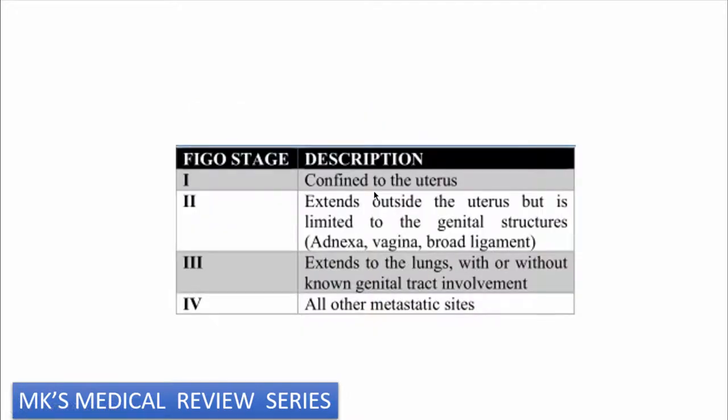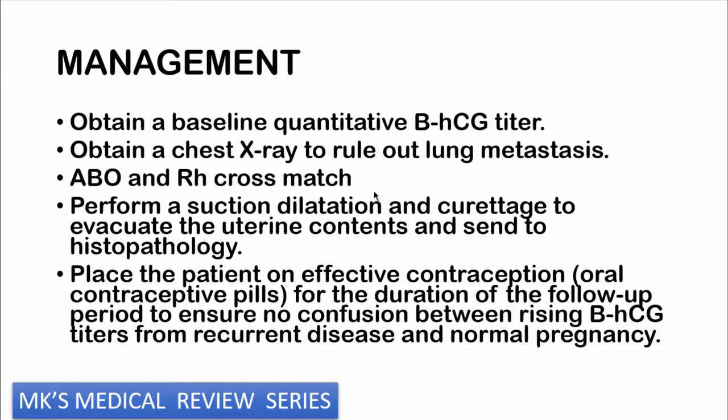The FIGO staging of the disease: Stage 1 is confined to the uterus. Stage 2 extends outside the uterus but is limited to genital structures — the adnexae, vagina, and broad ligament. Stage 3 extends to the lungs with or without involvement of the genital tract. Stage 4 involves other metastatic sites such as the brain and liver.